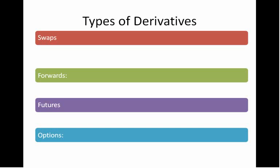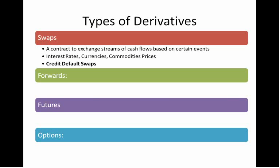Let's start with swaps. A swap is basically a contract to exchange streams of cash flows based on certain events occurring. For example, if interest rates change, or the value of currency changes, or commodities prices fluctuate, then a swap — a predetermined contract — will mandate that streams of cash flows are exchanged based on these events happening. One of the most common examples you hear about in the news is the credit default swap, which is an exchange of a stream of cash flows based on credit default — the default of some debt obligation. It doesn't have to be your debt obligation; you can create a swap on someone else's debt obligation. But the most important thing to understand about swaps is that you're exchanging cash flows.